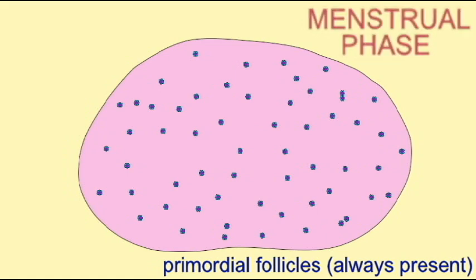Female gametogenesis occurs as oocytes undergo meiosis in conjunction with a surrounding layer of follicular cells, epithelial cells from the ovary, and the entire structure is known as the follicle.